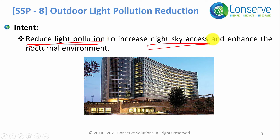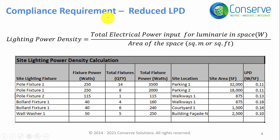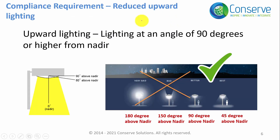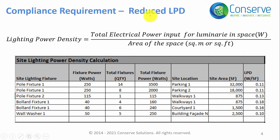There are three compliance parameters to reduce light pollution: number one, reduced Lighting Power Density (LPD); number two, reduced upward lighting; and number three, reduced light trespass. We will discuss each of them. To reduce light pollution, you must first reduce the Lighting Power Density, often abbreviated as LPD.